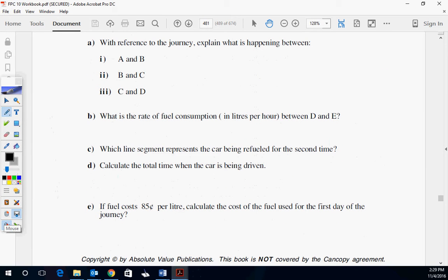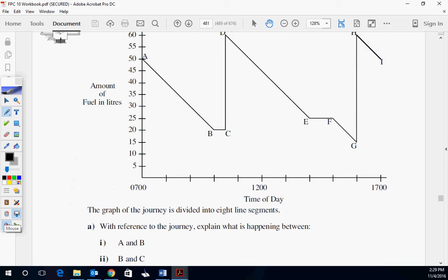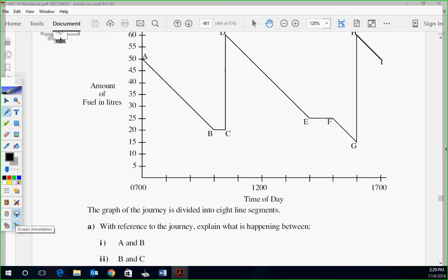What's the rate of consumption in liters per hour between D and E? So you've got to look at D and E. We're trying to figure out how much liters per hour they used. So first off, you've got to figure out how much liters they used. So liters they used is 60 to 25, so they used 35 liters.